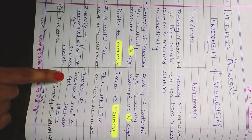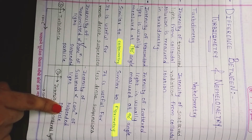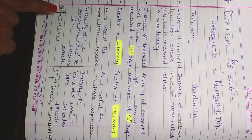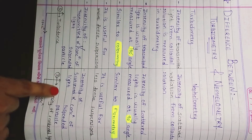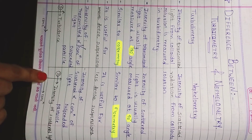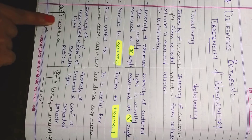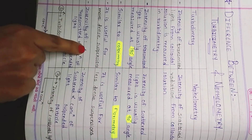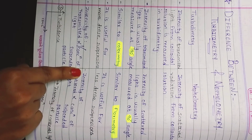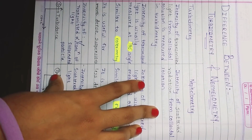In nephelometry, the intensity of the scattered light is directly proportional to the concentration of suspended particles. The final graph is turbidance (S) versus concentration for turbidimetry, and intensity (I) of scattered light versus concentration for nephelometry. Turbidance is directly proportional to concentration, but transmitted light is indirectly proportional. This is the basic difference between turbidimetry and nephelometry.